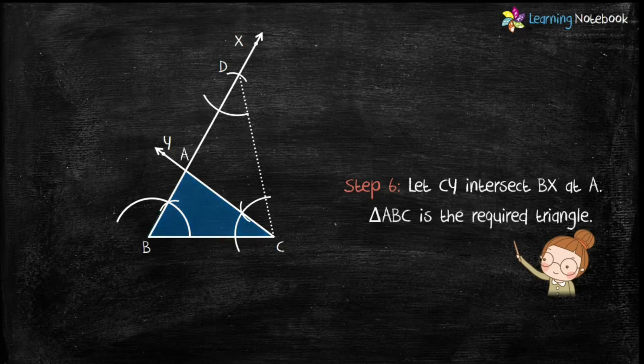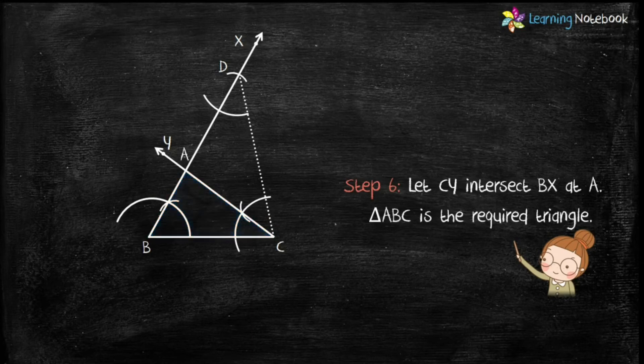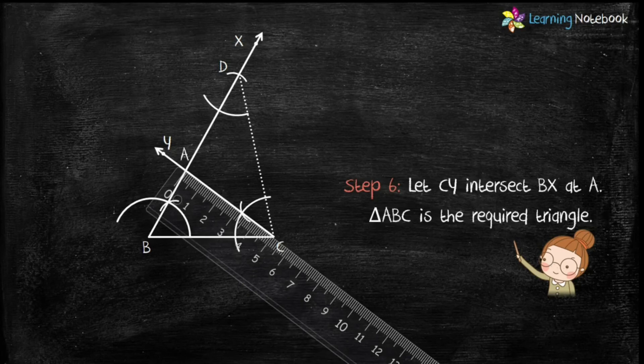Students, you must measure the length of AB and AC. The sum of their length should be equal to 8.4 centimeters, then only this construction would be correct. So let's measure AB and AC.